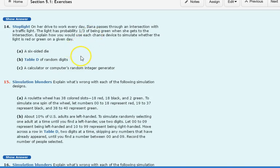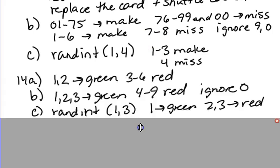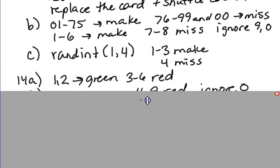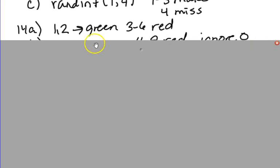The first is a six-sided die, the second table D of random digits, and the third is a calculator. So how would we use those? So for the dice, we could use two of the numbers on the die, like 1 and 2, to represent a green traffic light, and 3 to 6 to represent red.